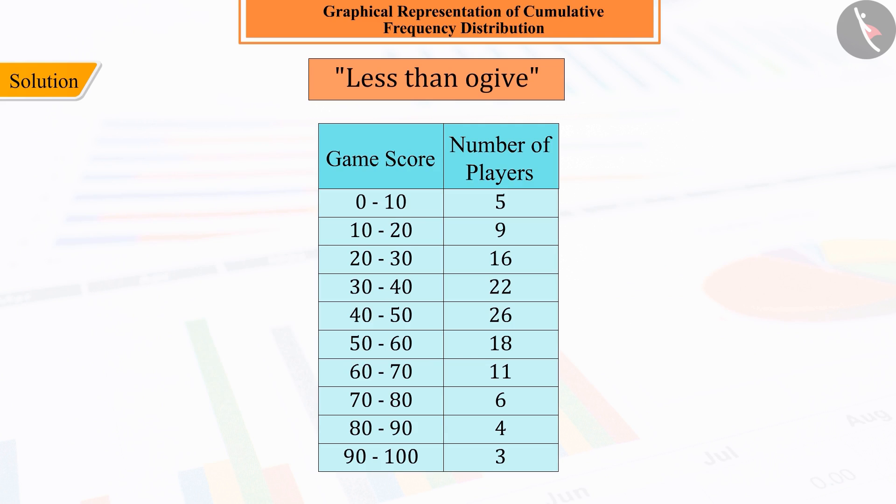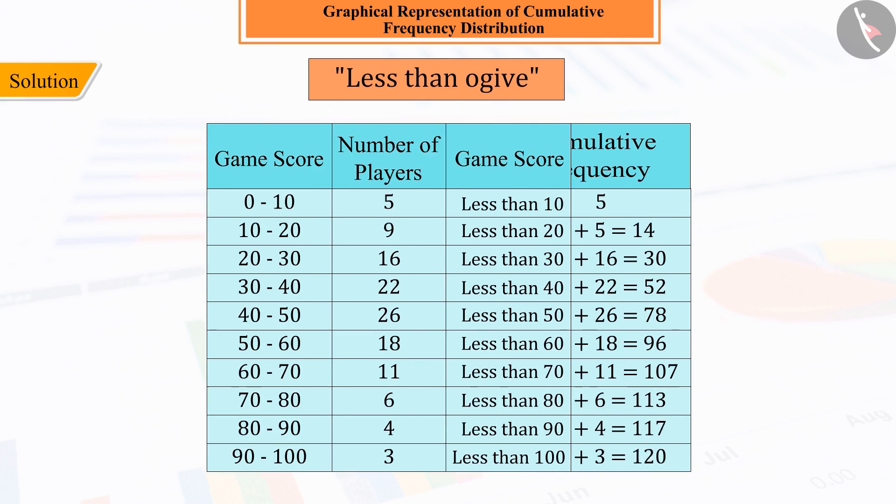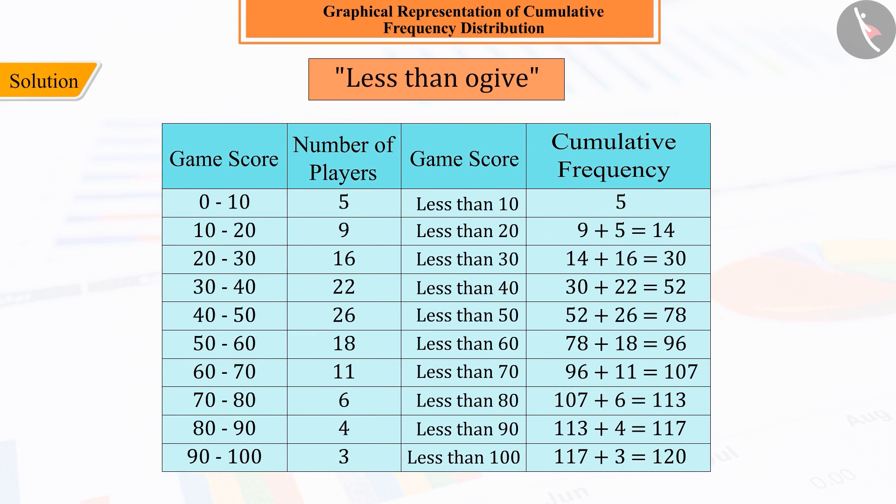For less than ogive, using the given data, we will construct the cumulative frequency distribution for less than ogive, where ten to hundred are the upper limits of the corresponding class intervals.